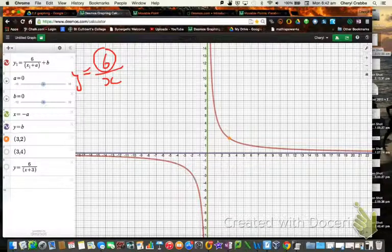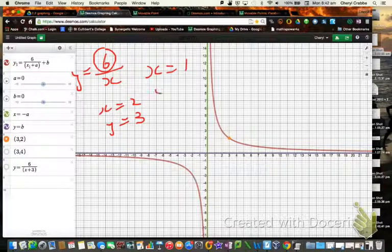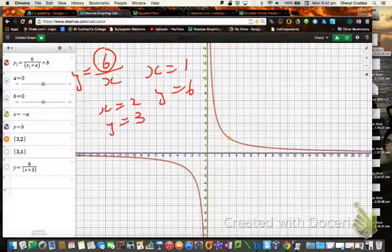So if we have x is 2, then y is 3. If x is 1, then y is 6 and so on. We know all that and we can plot that. That's all fine.